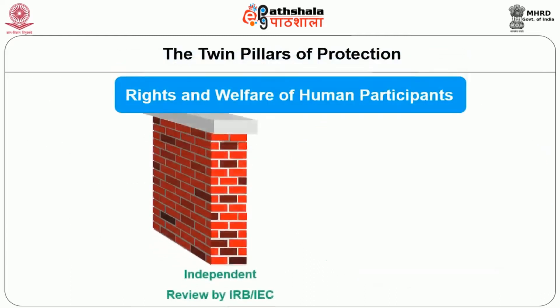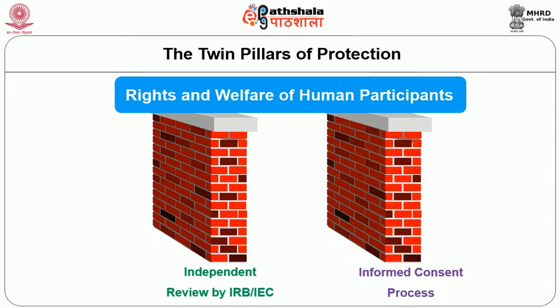You have heard that in any research, if you want to protect the participants, the twin pillars of protection are two components: one is an independent review by an ethics committee or institutional review board, and the other is the informed consent process from the participants. If these two are taken care of during the conduct of research, you are protecting the rights and welfare of the human participants. Today we will look at these two issues in detail — what we mean by the informed consent process, what we mean by independent review, and what is happening in the country currently.